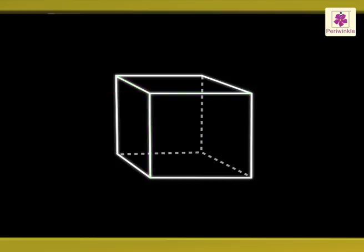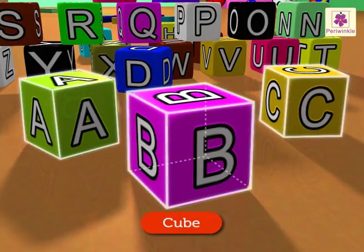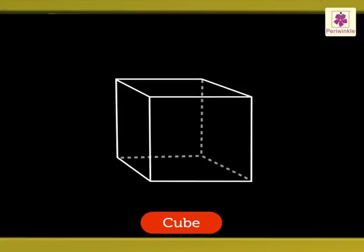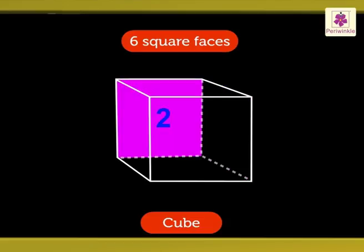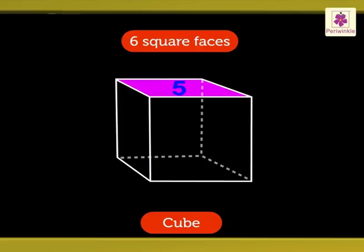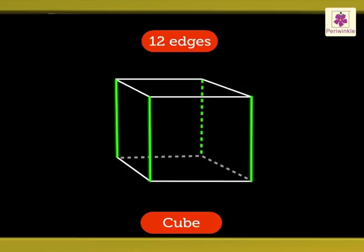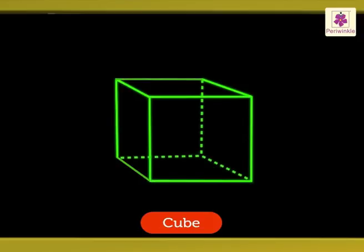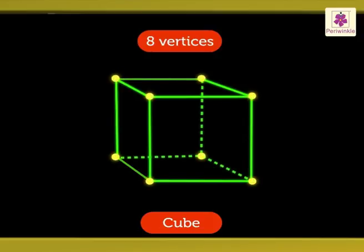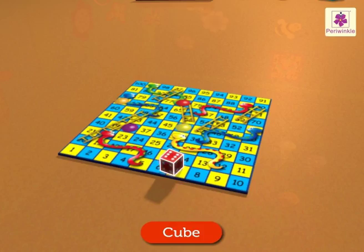The A, B, C blocks on the floor are cube-shaped. A cube has six square faces, twelve edges and eight vertices. The dice on the game board is also cube-shaped.